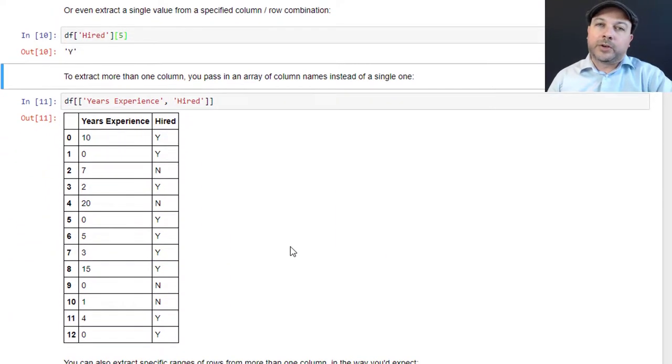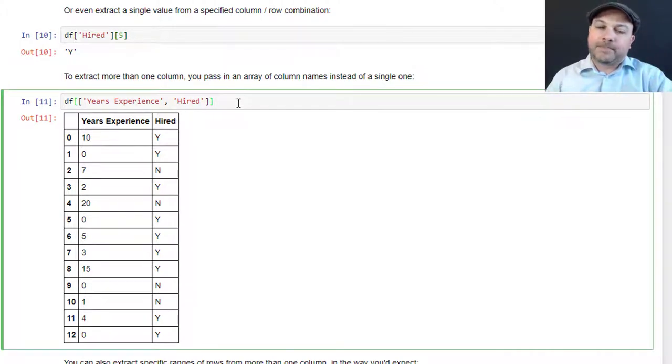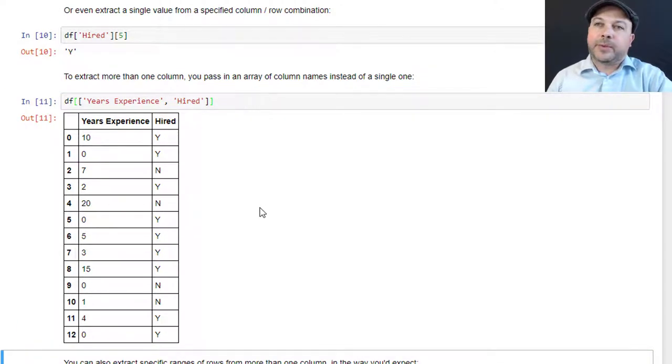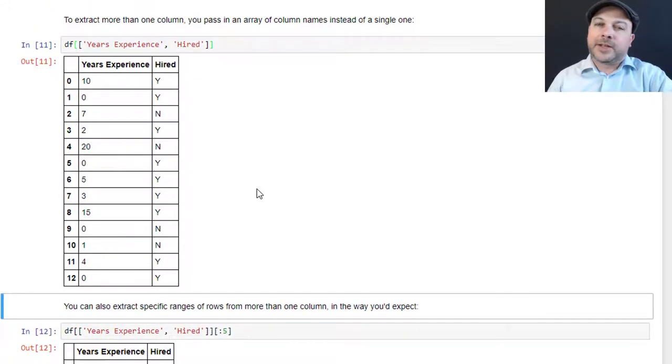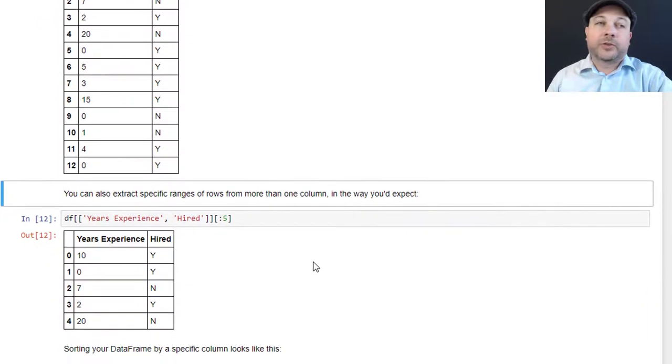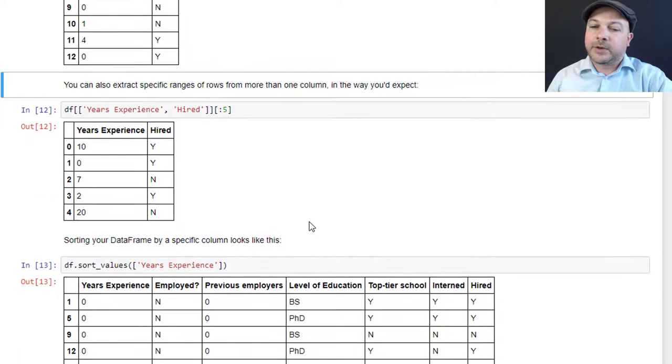You can also extract more than one column if you want to, obviously that's a more common situation. Instead of passing in just a single quoted column name, you could pass in an array of column names instead. We're going to say df[[]], and then we're going to have another layer of brackets inside those brackets that represents the array of column names that you want. So we say df[['Years Experience', 'Hired']] and that will give us back this new data frame that consists of the years experience and hired columns and nothing else. Obviously you can add more columns to that list if you want to. A very common operation to extract only the features or the columns that you actually care about for a specific task. The less data that you push around, the better. So that's usually the first thing you want to do, get rid of the stuff you don't care about.